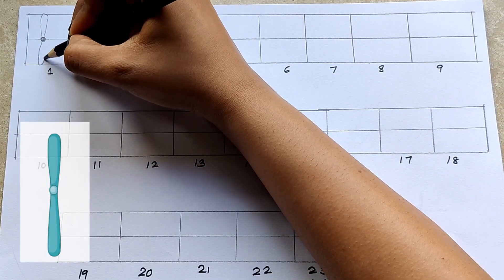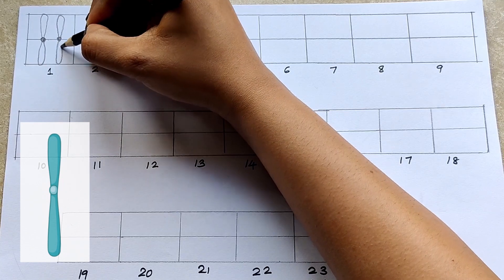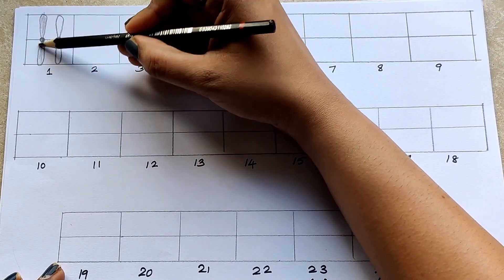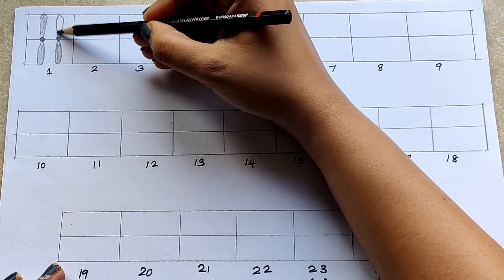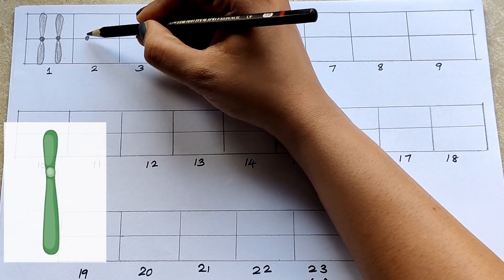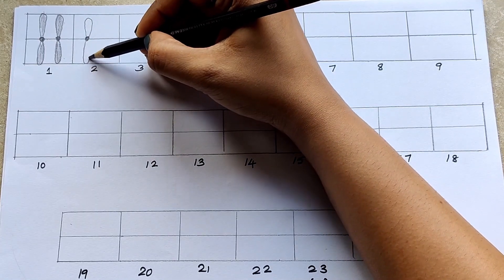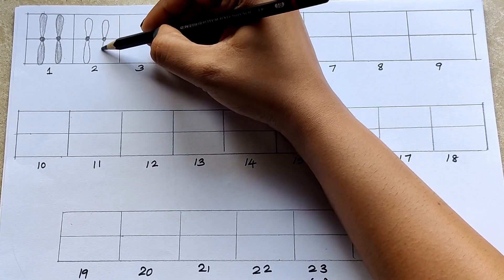First chromosome is the biggest one and it is metacentric. So here p-arm and q-arm are of equal length. Second one is submetacentric. So here p-arm is slightly smaller than the q-arm.